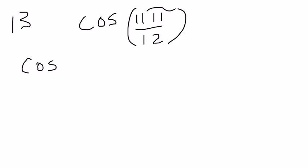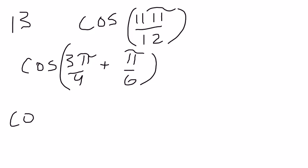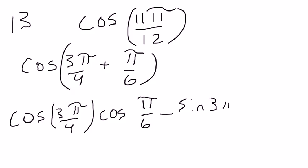So cosine of 3π over 4 plus π over 6. The formula is cosine of an angle plus an angle equals cosine of 3π over 4 times cosine π over 6 minus sine 3π over 4 times sine of π over 6.